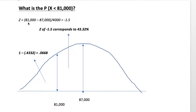In this case, 81,000 minus 87,000 divided by 4,000 is negative 1.5. So, from the mean of 87,000 to the value of my random variable X happens to be negative 1.5 Z's, or 1.5 standard deviates from the mean.